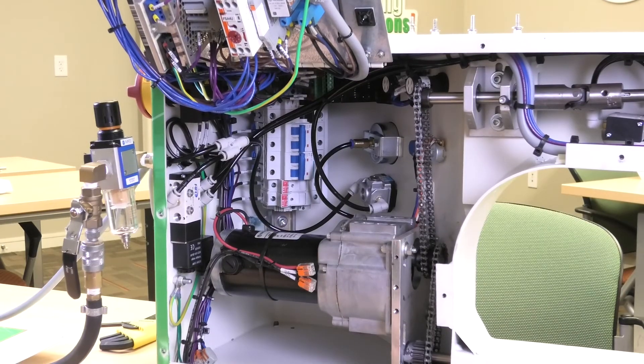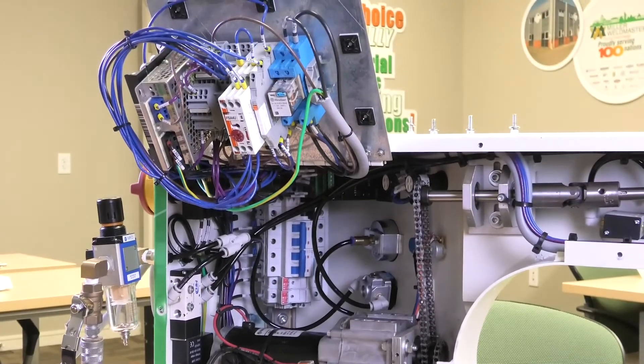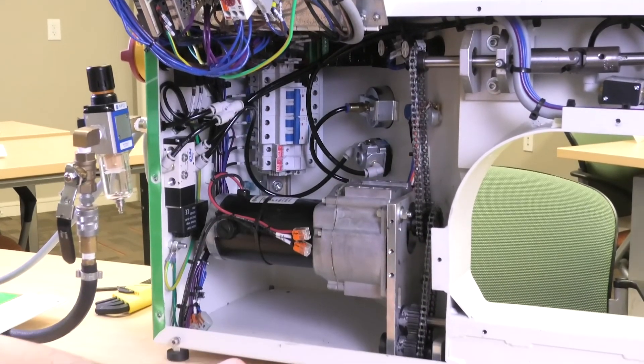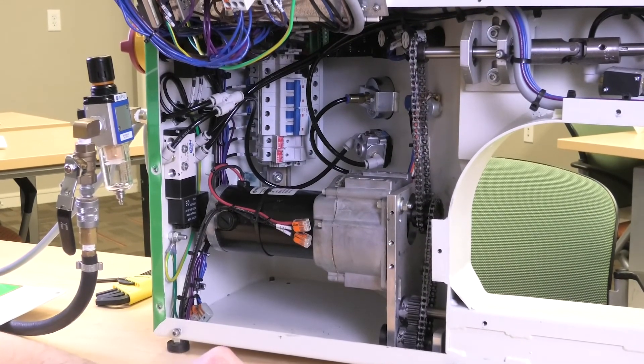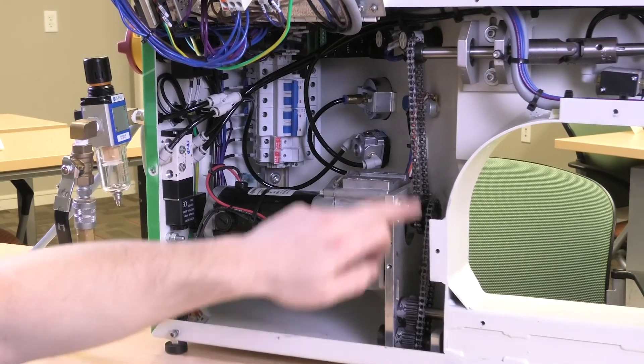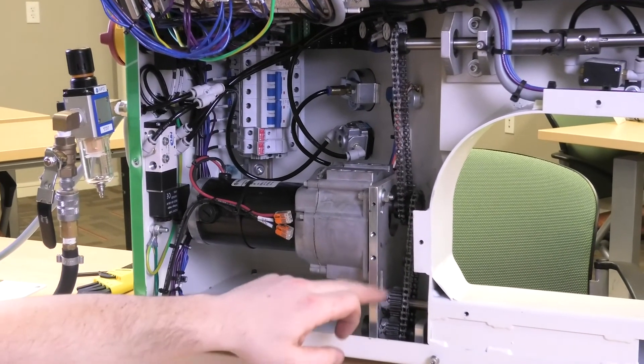After removing the back cover and flipping the electrical panel up, you can see the insides of the machine. Every six months or so, you'll want to grease these chains and also the sprockets down here.